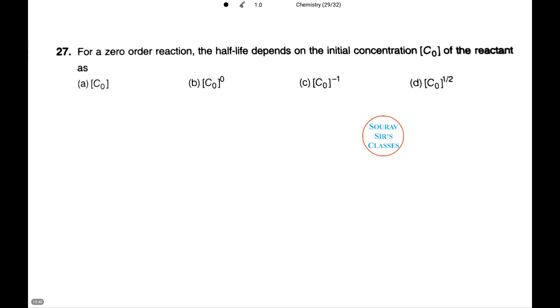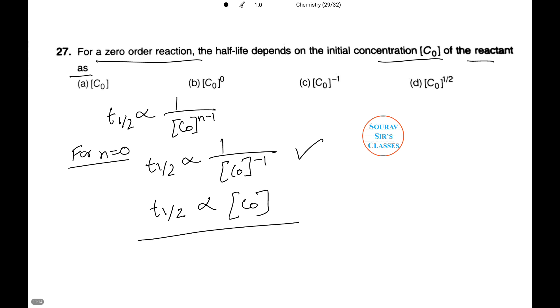Now let's calculate the half-life period at initial concentration of C0 of the reactant at zero-order condition. Half-life period for an nth order reaction can be given as T half directly dependent on 1 by C0^(n-1). Now for n equals 0, T half is directly proportional to 1 by C0^(-1), or T half is directly proportional to C0, that is option A.